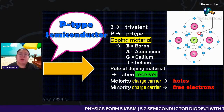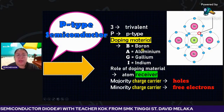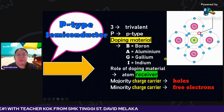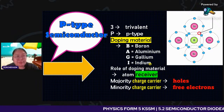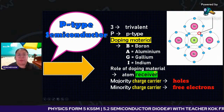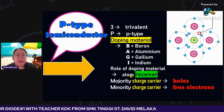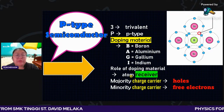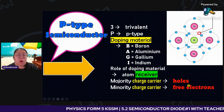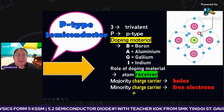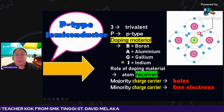So P stands for positive. Examples of doping material for P-type: boron, aluminium, gallium, and indium — all trivalent. The role of the doping material atom is called 'acceptor atom' — they want to accept the electron. The majority charge for P-type is hole (positive charge); the minority is free electron. Memory tip: '3P BAGI' — trivalent, P-type, and BAGI stands for Boron, Aluminium, Gallium, Indium.